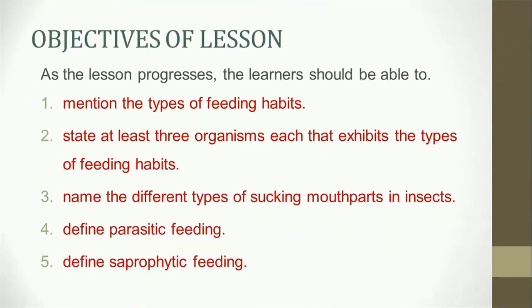Objectives of the lesson. As the lesson progresses, the learners should be able to: 1. Mention the types of feeding habits. 2. State at least three organisms that exhibit the type of feeding habits mentioned. 3. Name the different types of sucking mouth parts in insects. 4. Define parasitic feeding. And 5. Define saprophytic feeding.